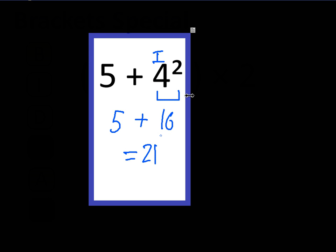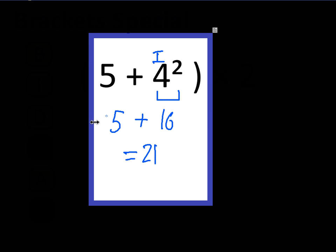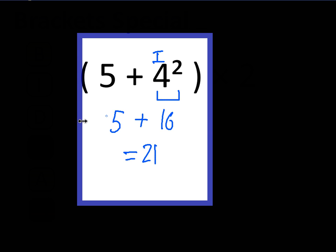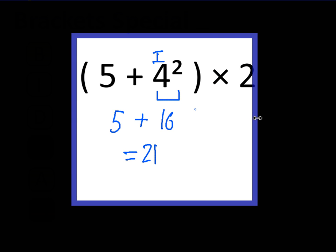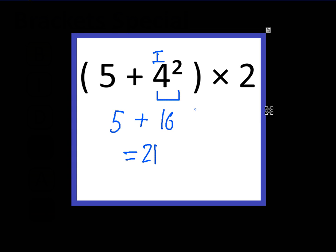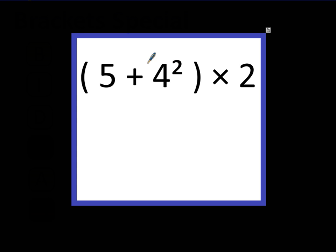What would have happened if all of that had been inside a pair of brackets and then we had to times the answer by 2? What would you do then? Well, you would do exactly what we've just done — within the brackets, now that we know we've got a pair of brackets, it's the most important thing.